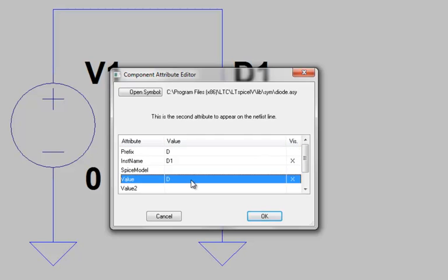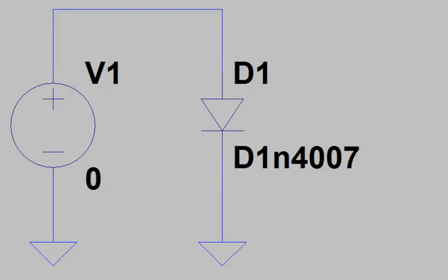Next, we need to edit the value for the symbol to coincide with the name in the .model statement. And if you recall, that was D1N4007. Once we've added that, we can click OK. And now we have a symbol to represent that third-party model in our schematic.